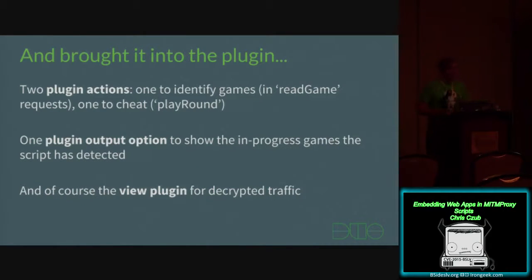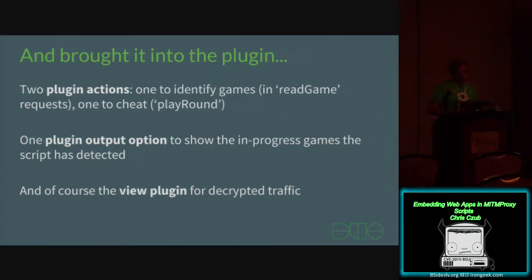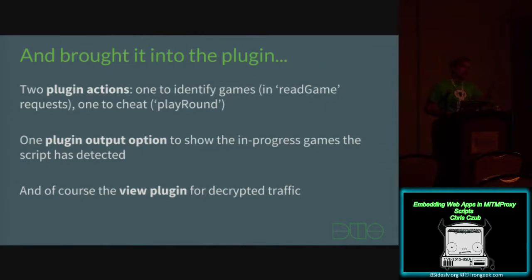For the plug-in, I created a few different things for this game. I did two plug-in actions: one to identify the games — because you can be player one or player two, and the only way to determine that is from the read game request — and one to actually perform the cheating against the play round requests. I had a plug-in output option to show in-progress games the script detected. And of course I implemented that view plug-in to show the decrypted traffic on the front end without affecting it on the wire.